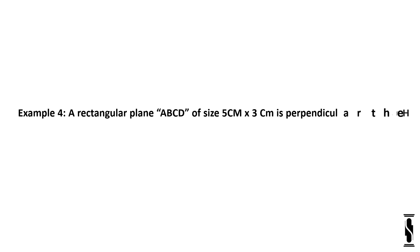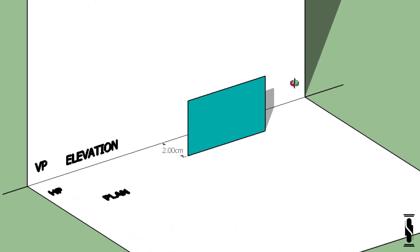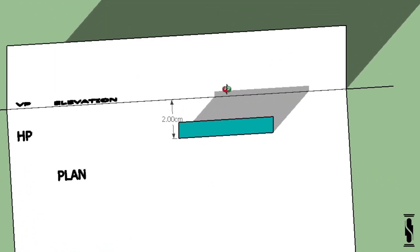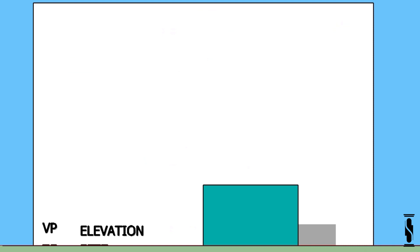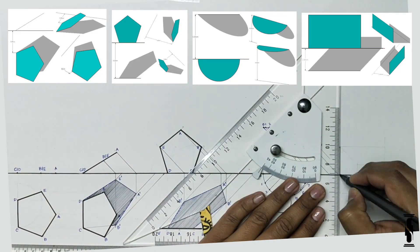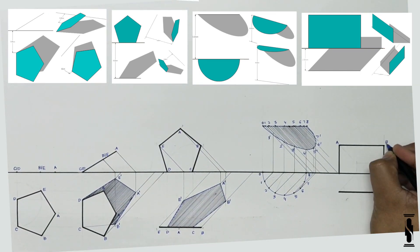A rectangular plane ABCD of size 5 cm by 3 cm, perpendicular to HP, resting on HP with the 5 cm side and 2 cm away from VP. Find the shadow profile of the rectangle. Take a look at the 3D representation. We can see that the shadow is falling on both HP and VP, and some portion of this shadow is hiding behind the elevation of the plane. Now draw the basic orthographic projection as per the given condition.